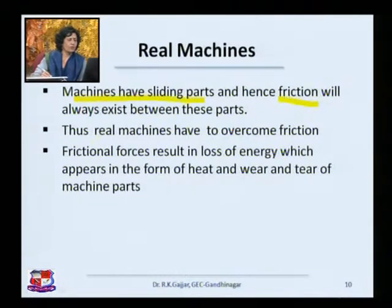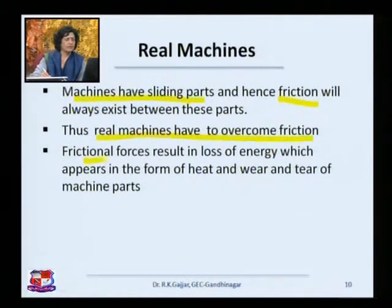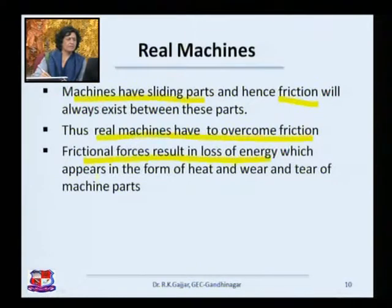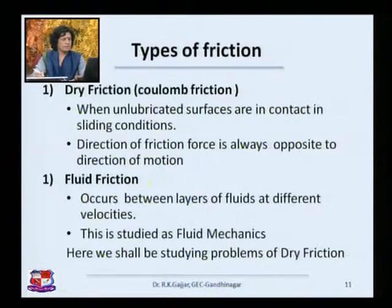Real machines always have to overcome friction. Friction is always there. Most of the time you want to reduce friction because it involves additional work. It involves loss of energy. This loss of energy can be in many different forms — in the form of heat, wear and tear of machines, etc. So ideal machines have to be designed so that friction is minimized.